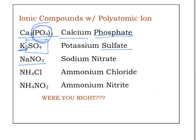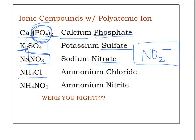On your polyatomic chart you'll notice two similar-looking ions: nitrate is NO3 and nitrite is NO2. Pay attention to the number of oxygens because they look similar but are named differently. In this case NO3 is nitrate. The next compound is tricky — NH4 is the polyatomic cation with a plus-one charge, called ammonium. Cl is the anion and since it's not polyatomic we change the ending to -IDE, giving us ammonium chloride.